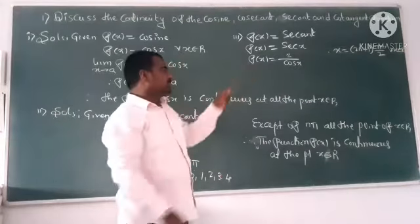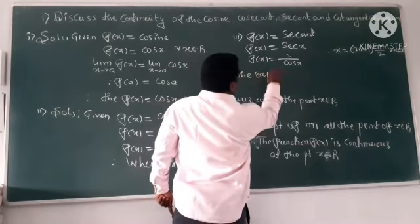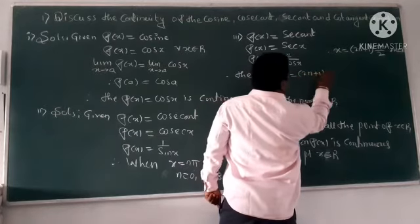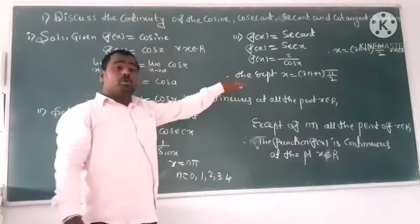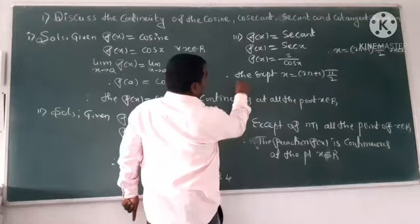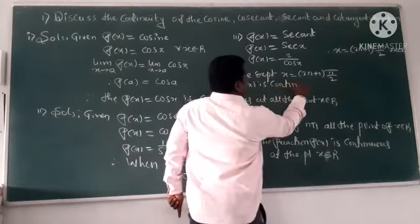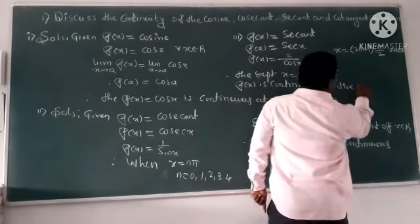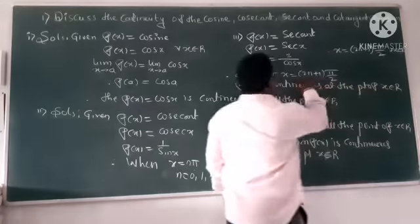Therefore, except point, which point? So x is equal to 2n plus 1 pi by 2. Their other points are, it means all the points, which point? f of x is continuous at the point of x belongs to R except this point. Right? In that R value does not consider.